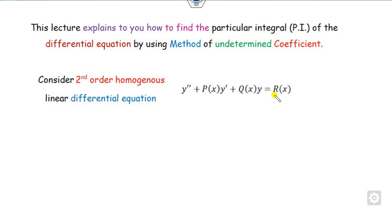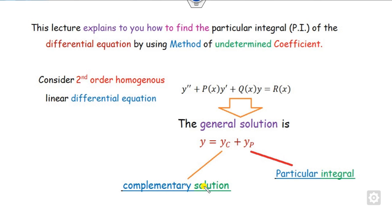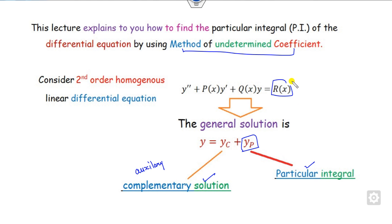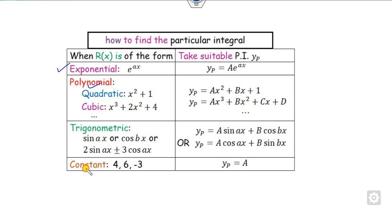As we discussed, whenever r(x) is non-zero, you can find the general solution with the help of the complementary solution and the particular integral. The complementary solution yc can be found using the auxiliary equation, while yp, the particular integral, can be found using the method of undetermined coefficients. These two parts were already discussed in the last two videos. Now we will discuss the trigonometry portion.